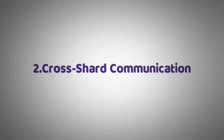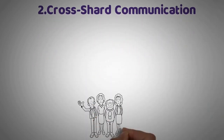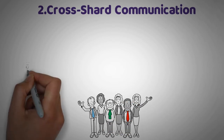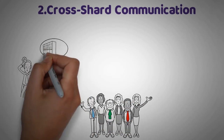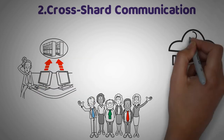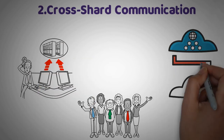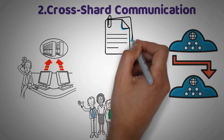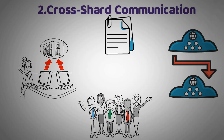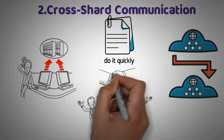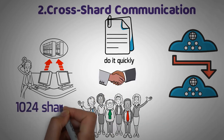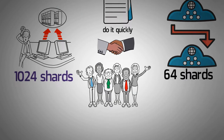The second risk is cross-shard communication. In order for shards to work together, they need to be able to communicate with each other. This presents a challenge as we need to find a way for the nodes on one shard to verify the information they're receiving from another shard without slowing things down. We need to be able to trust the information we're getting from other shards, but we also need to do it quickly. This is a long-term concern and not something to worry about at the moment, because the Ethereum blockchain can support 1024 shards and we only have 64 shards being proposed at the moment.